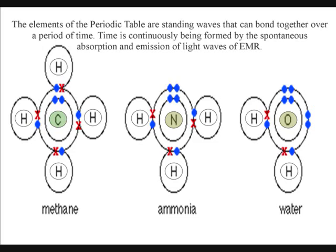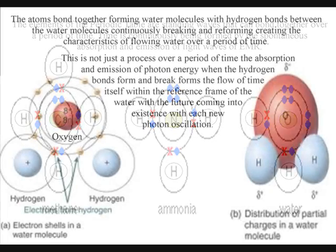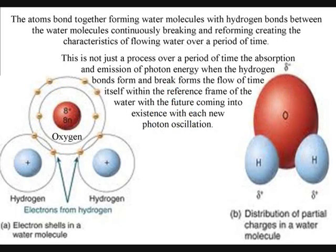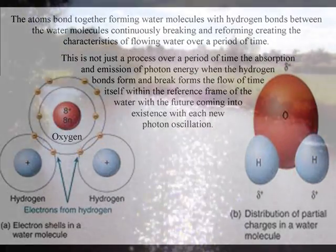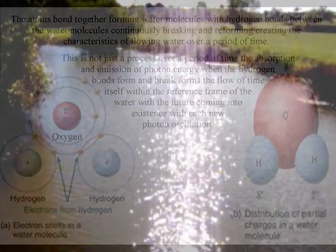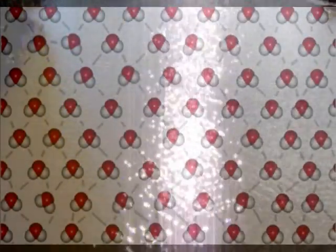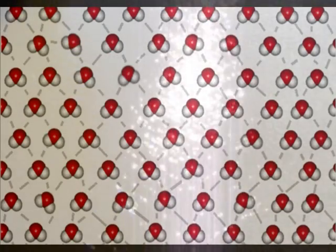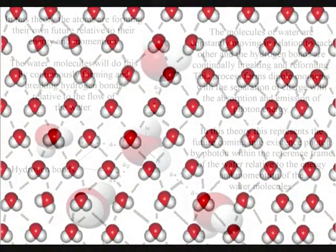The atoms of the periodic table can interact with the wave-particle duality of light and each other within this speed limit. A good example of this is water with hydrogen bonds breaking and reforming releasing photon energy with the future unfolding relative to the flowing water.